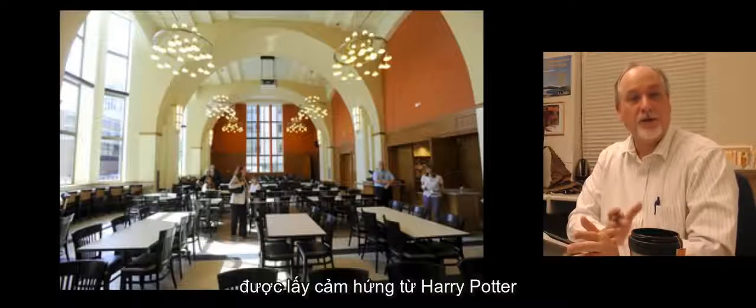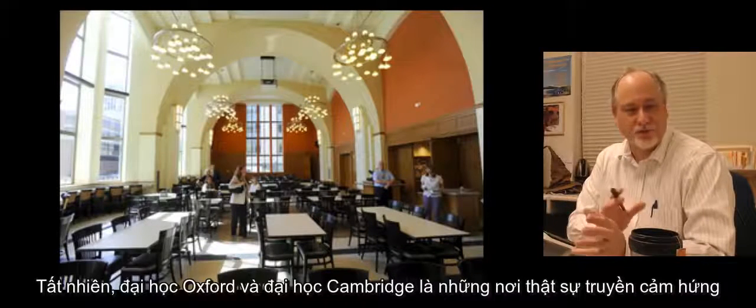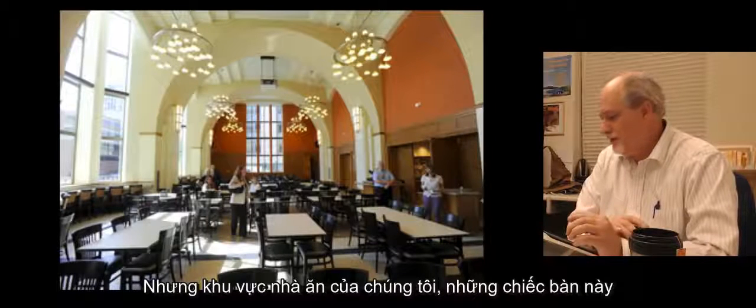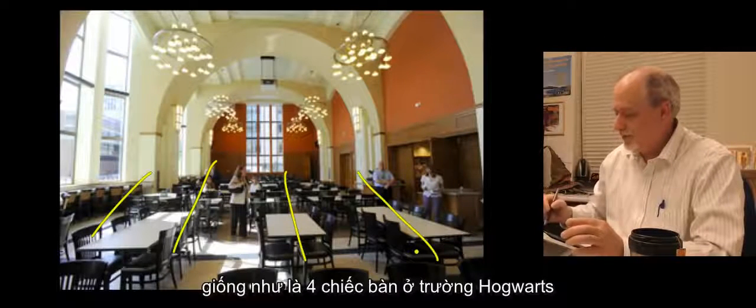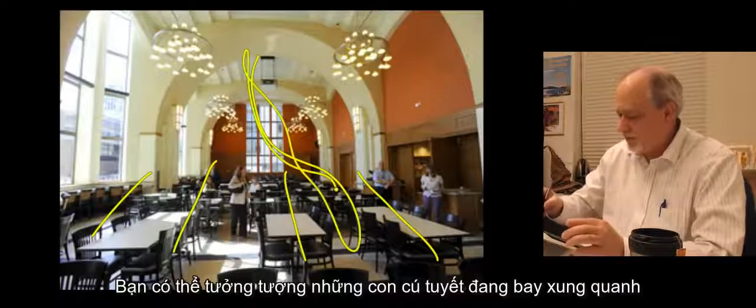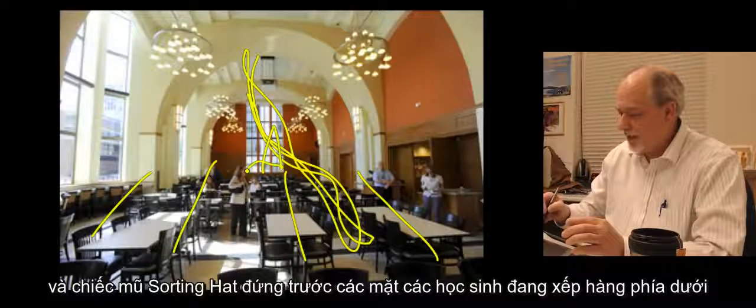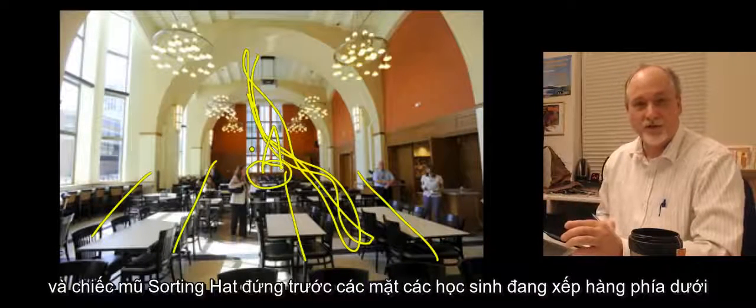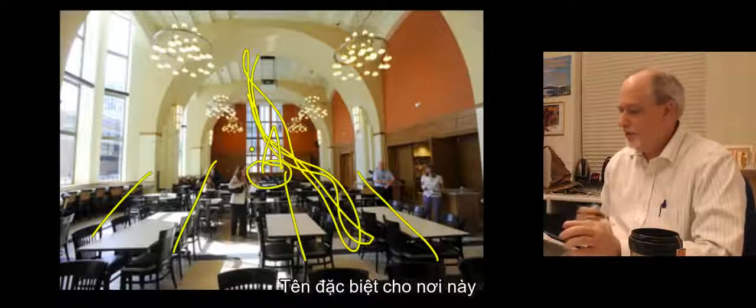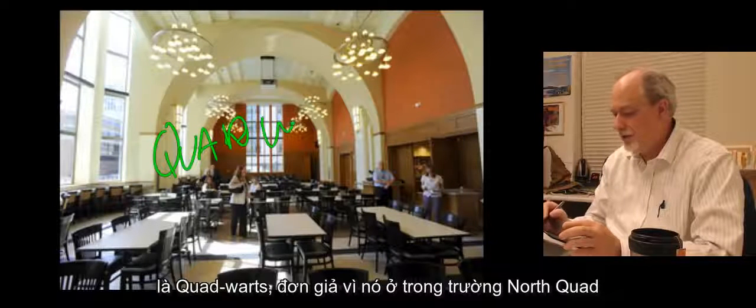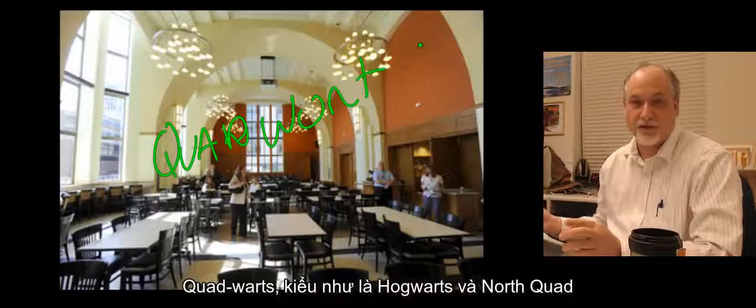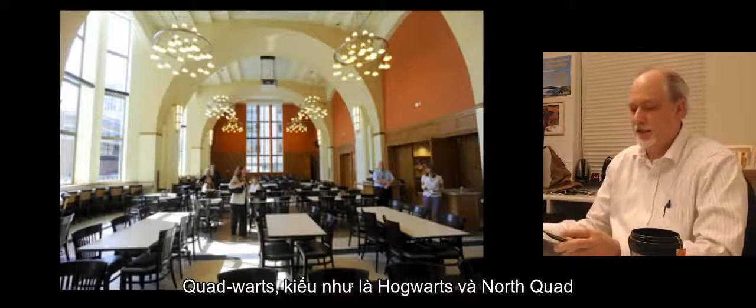One of the things I like about it is that I think it's really highly inspired by Harry Potter, the kind of, of course, Oxford and Cambridge are the real inspiration for Harry Potter, but our cafeteria, for example, it kind of looks like the four tables in Hogwarts, and you can kind of imagine a snowy owl flying around and a sorting hat at the front, sorting people. And so the nickname, the nickname for the place is Quad Warts, because it's North Quad, Quad Warts. That's like Hogwarts and North Quad kind of jam together.